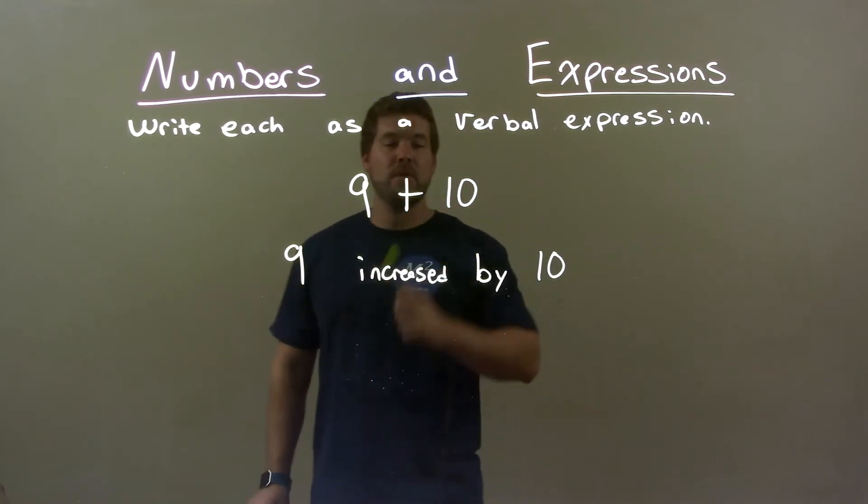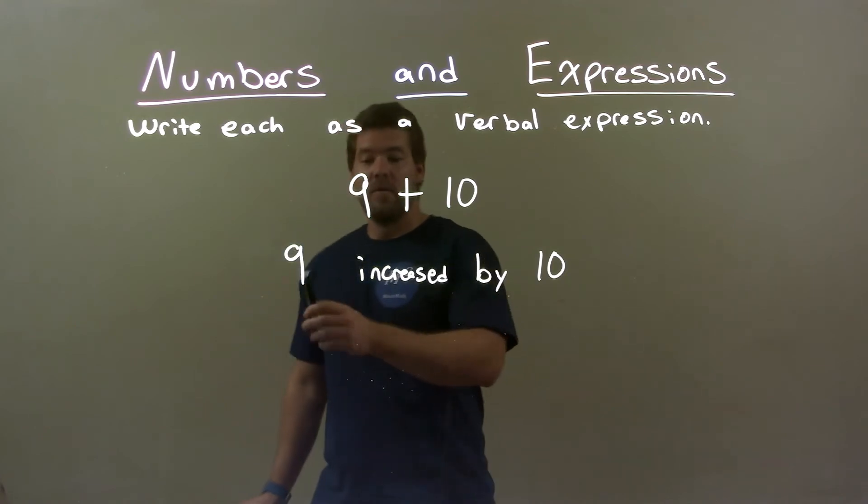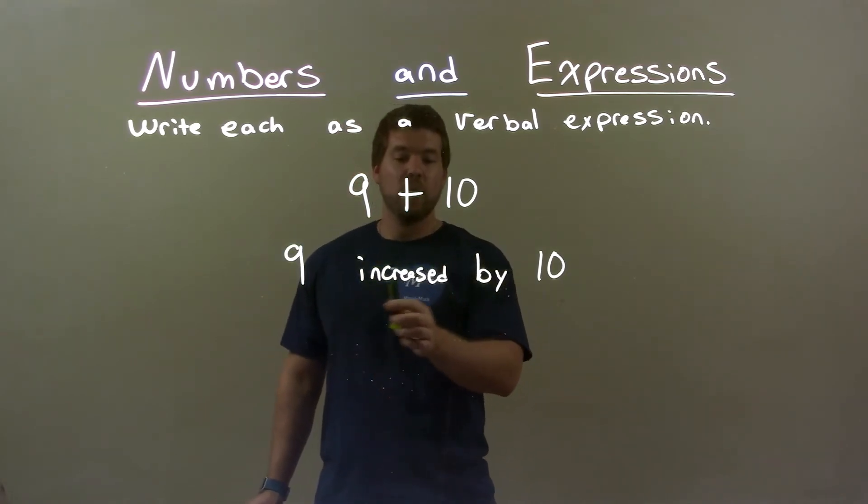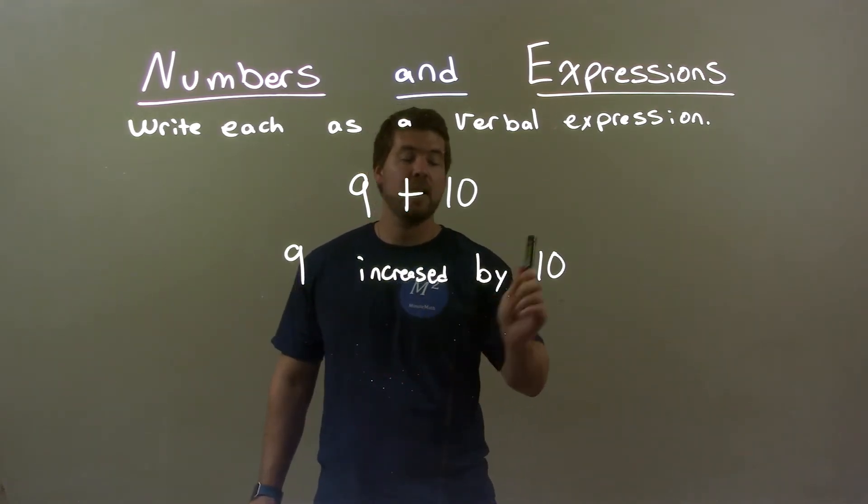So quick recap: we have 9 plus 10, and we have to write that as a verbal expression. We start with 9, instead of the plus sign, we use increased by 10. So here again is our final answer: 9 increased by 10.